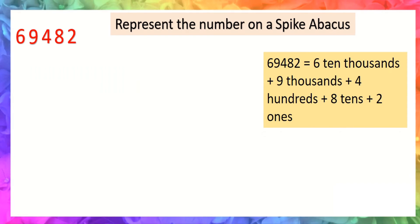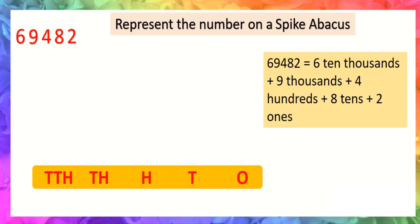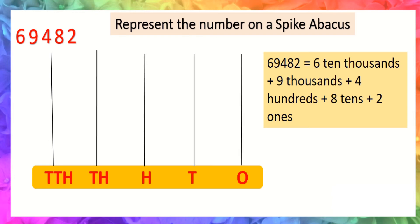Now see an example of five digits. The number is 69,482. Again, first step is to draw a spike abacus. The number consists of five digits, so we need to draw five spikes: one, two, three, four, five. Then represent the place value: ones, tens, hundreds, thousands, ten thousands. At ones place the digit is two, so we will draw two beads: one, two.